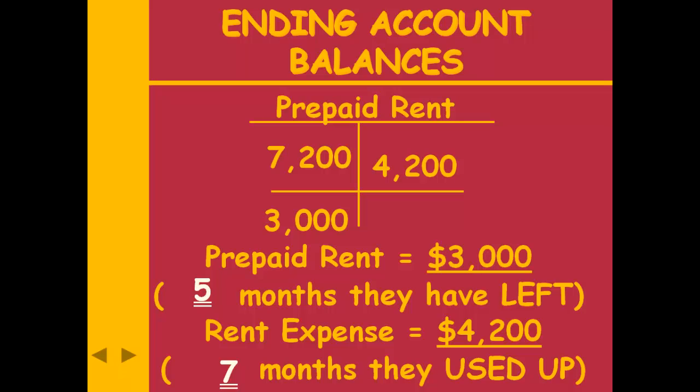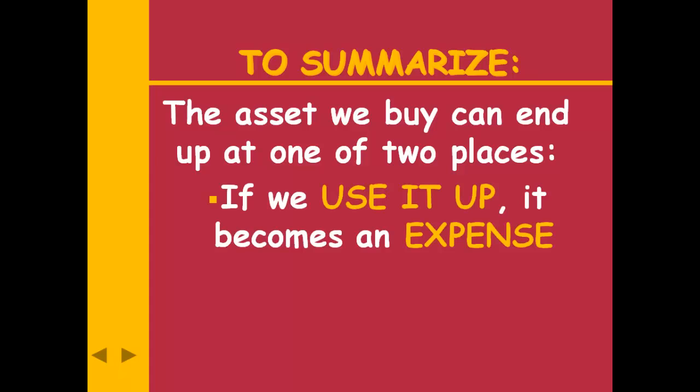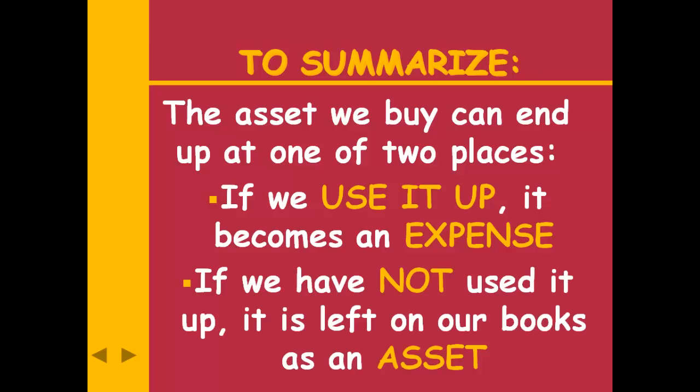The balance in rent expense is $4,200, representing seven months rent. We paid 12 months rent in advance. The part I used up became rent expense. The part I did not use up remains on my books as prepaid rent. That $3,000 will become an expense next year when I use it up. This recaps the key principle: once we use it up, it becomes an expense; the portion not yet used stays as an asset.